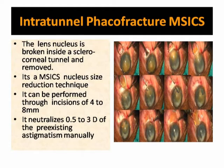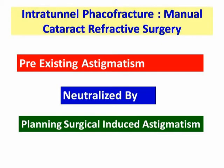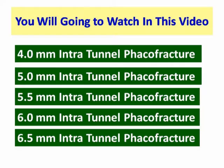Intratunnel FACO fracture can be performed through an incision of 4 mm to 8 mm. Up to 3 diopters of pre-existing astigmatism can be effectively neutralized by planning the incision size and site, eliminating the need for expensive toric IOLs. In other words, neutralizing pre-existing astigmatism by manual small incision cataract surgery-induced astigmatism is also a cataract refractive procedure.